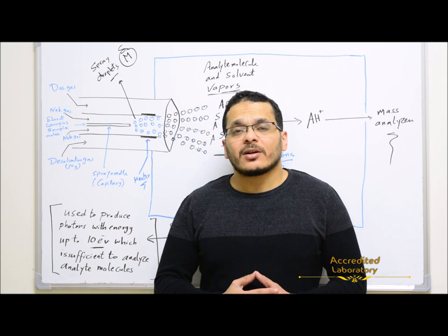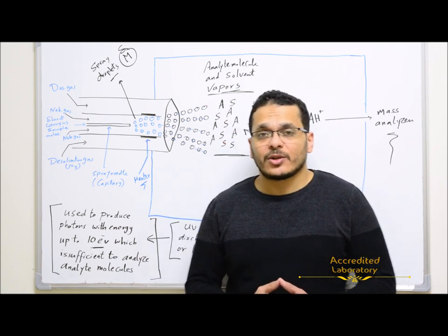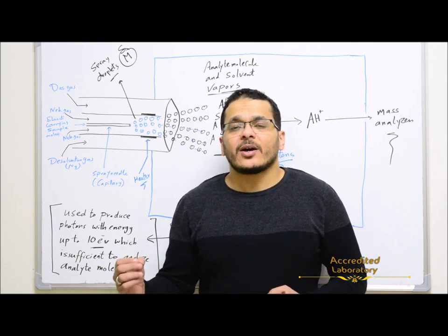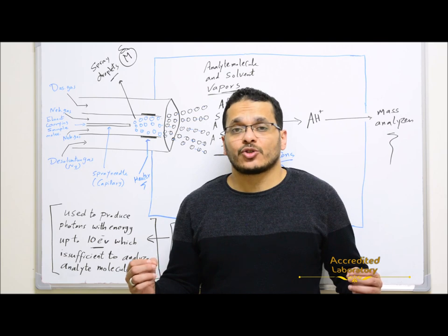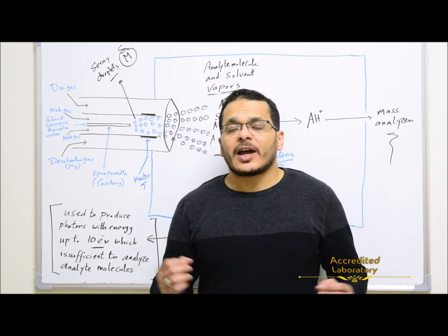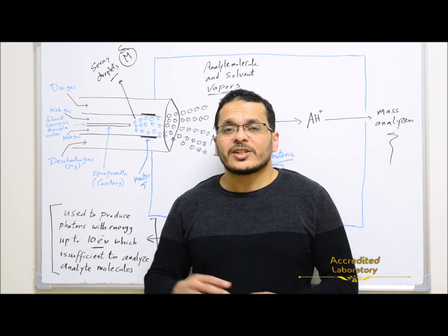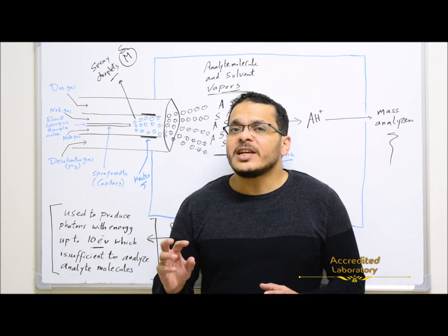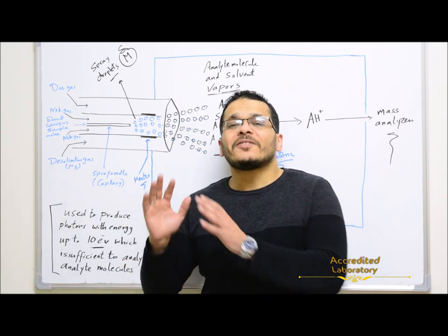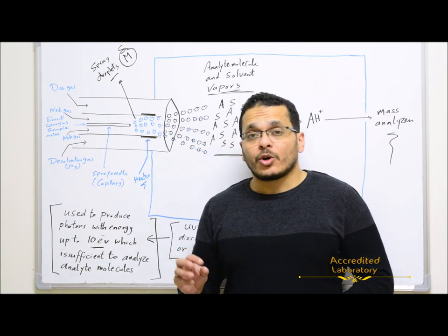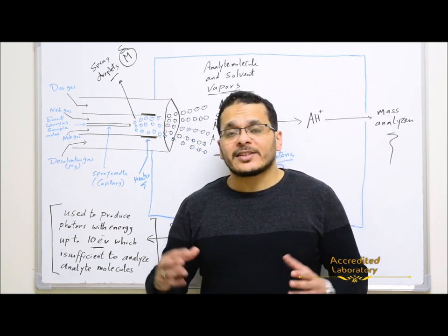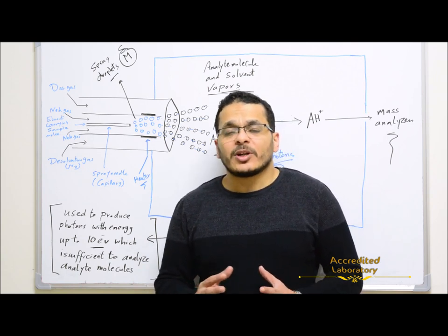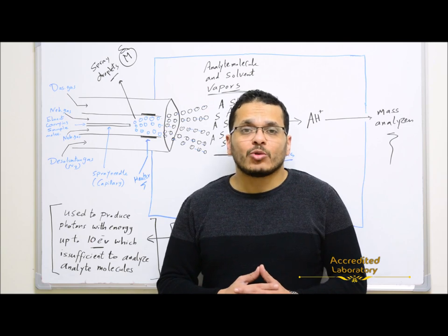In today's lecture I will start with atmospheric pressure photo ionization ion source, which is less popular when compared to electrospray ionization or atmospheric pressure chemical ionization ion source. It is a type of soft ionization technique where samples will be ionized in the ion source to get a precursor ion, which will be transferred to the mass analyzer to be fragmented in Q2, the quadrupole collision cell, to get product ions. Samples will be ionized by the photons generated by the UV light of the krypton lamp.